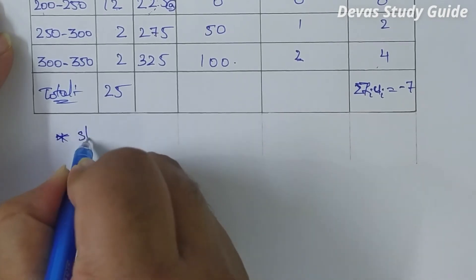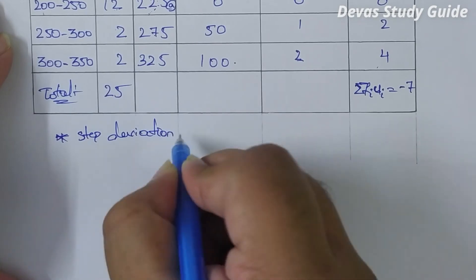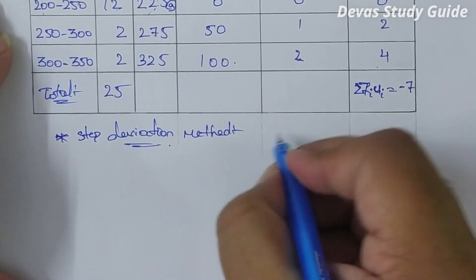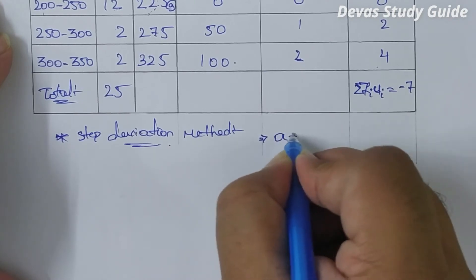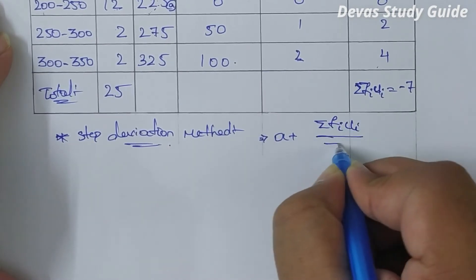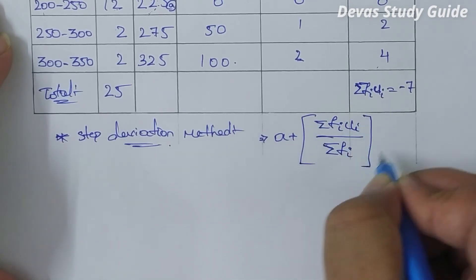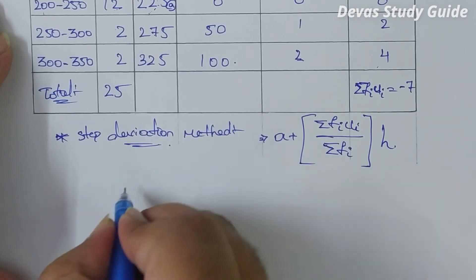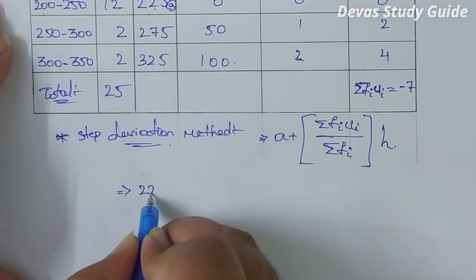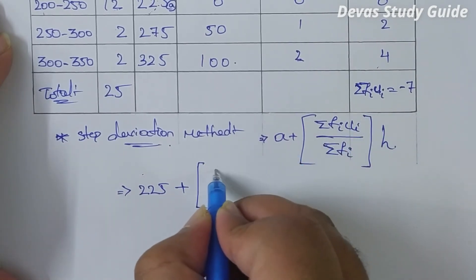We are using the step deviation method. The formula is: mean equals a plus (sigma fi ui divided by sigma fi) into h. Substituting values: a is 225.